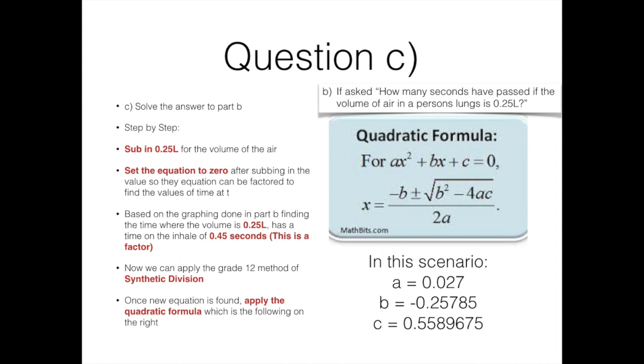The quadratic formula is given in simple terms on the right. Once the synthetic division equation is done, you will get a new equation with three variables. The three variables are a, b, and c. They will be plugged into the quadratic equation to finally solve for t.